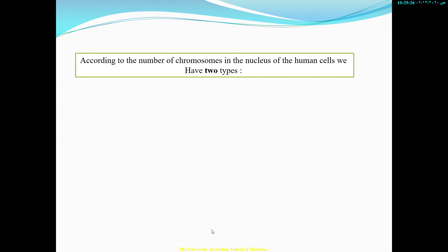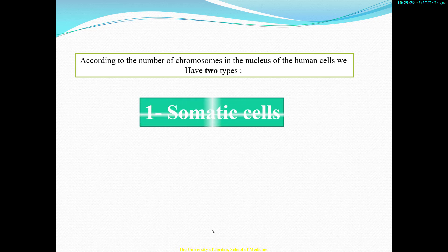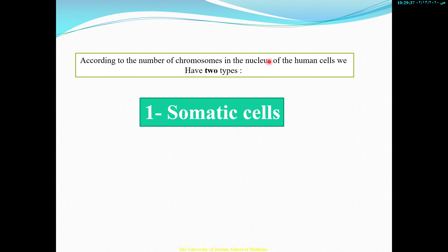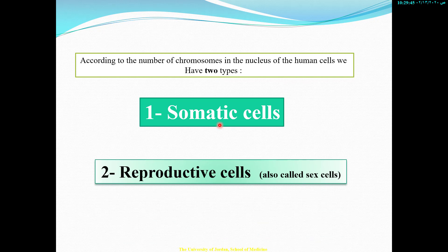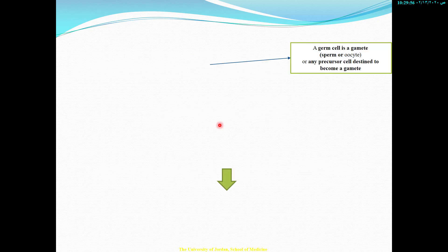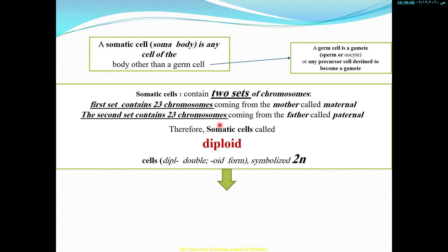According to the number of chromosomes in the nucleus of human cells, we have two types: somatic cells and reproductive cells, also called sex cells. Now what are the differences between these two types of cells? First of all, let's talk about somatic cells. They have been named somatic cells as referring to the body — somatic cells are all the cells in your body, for example the cells of your skin, lungs, blood cells.